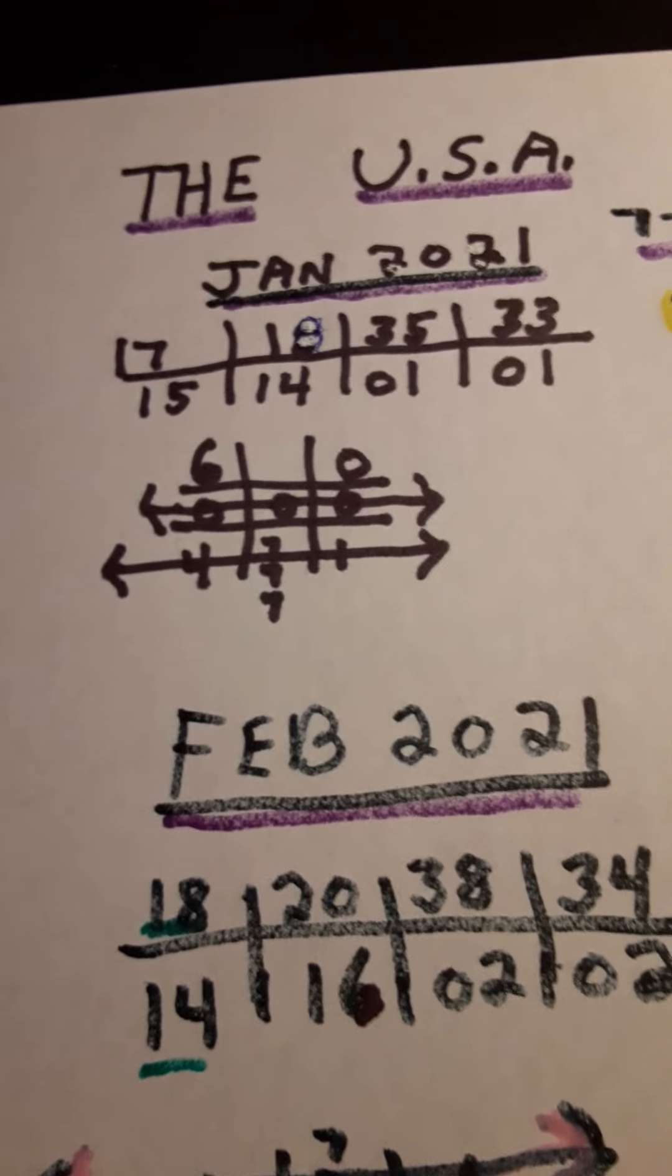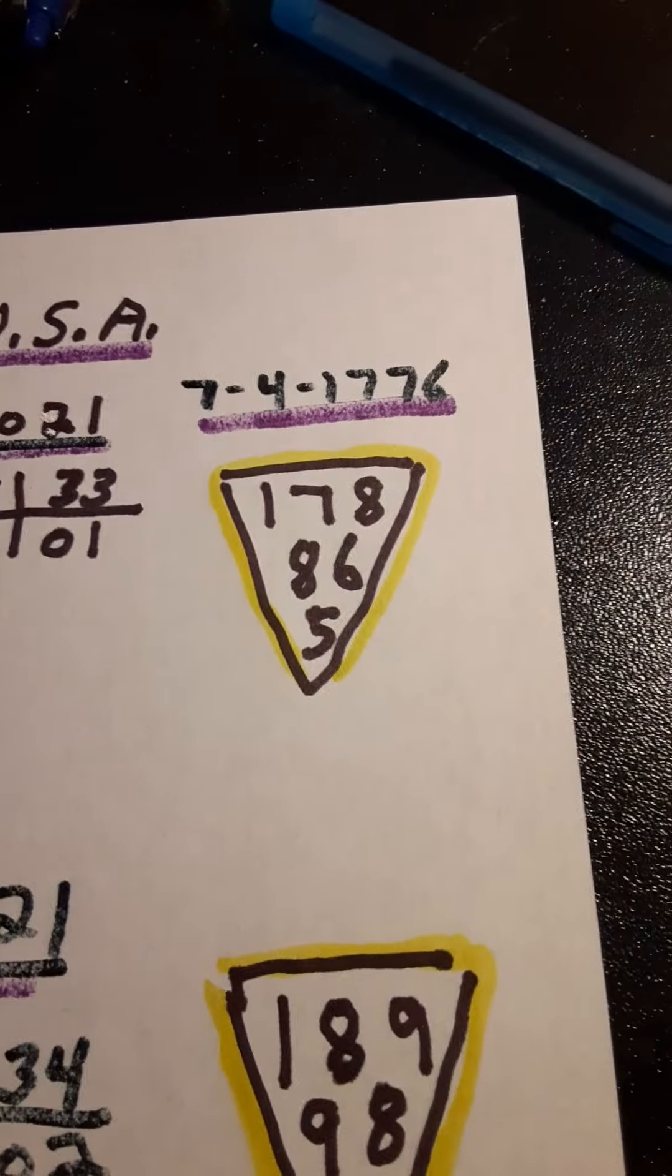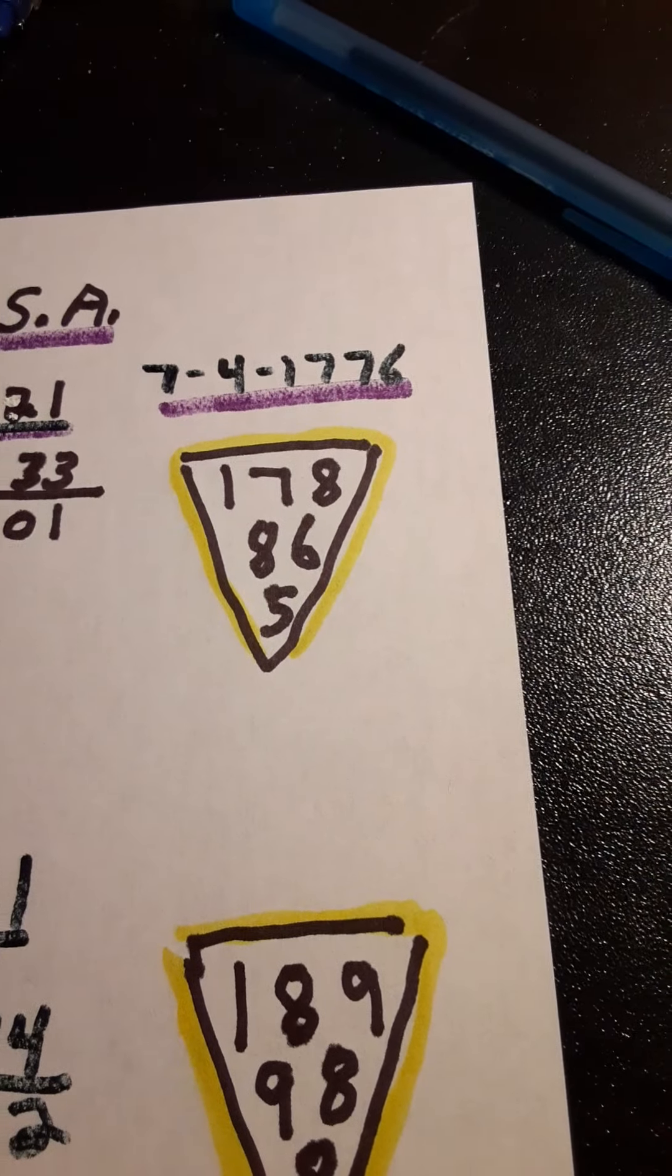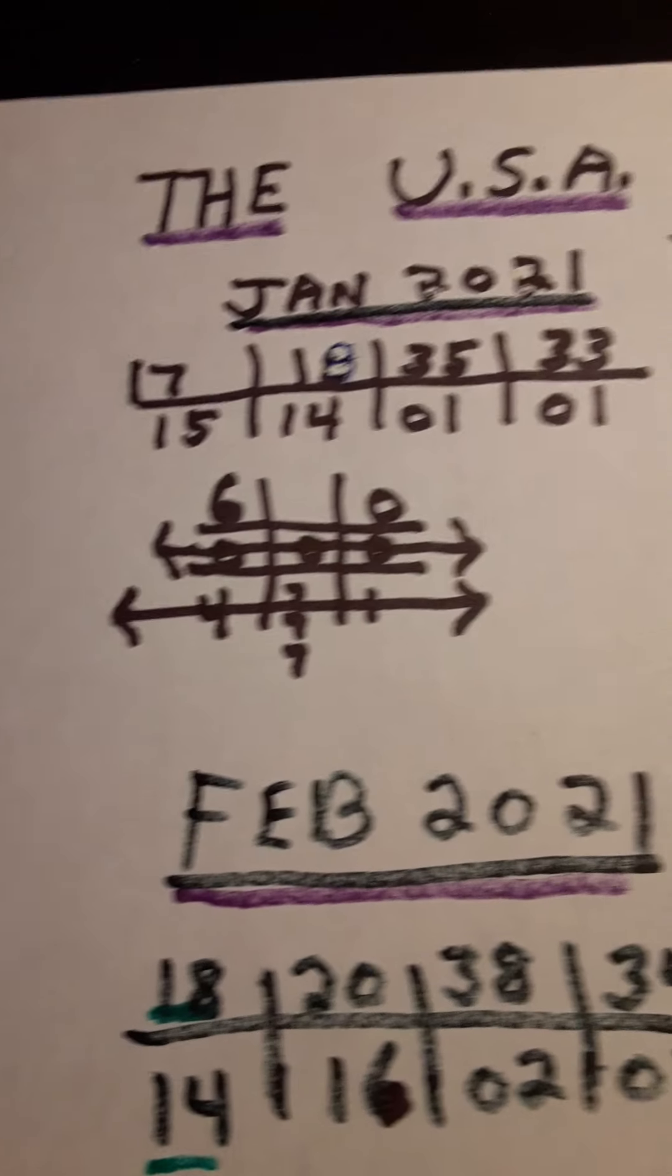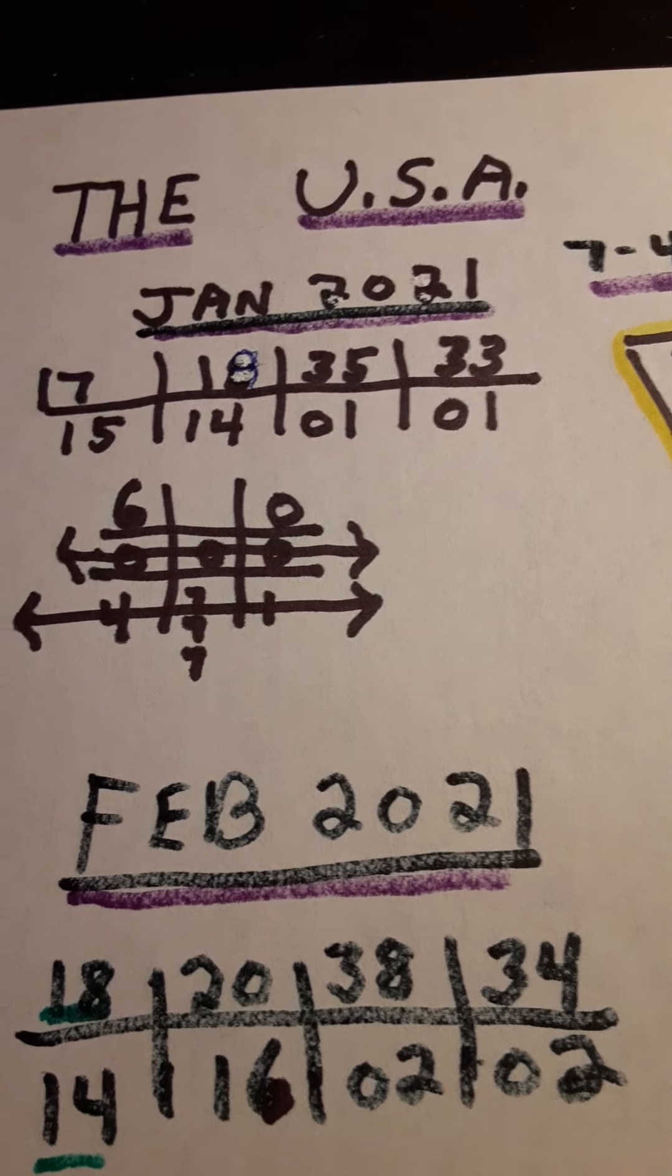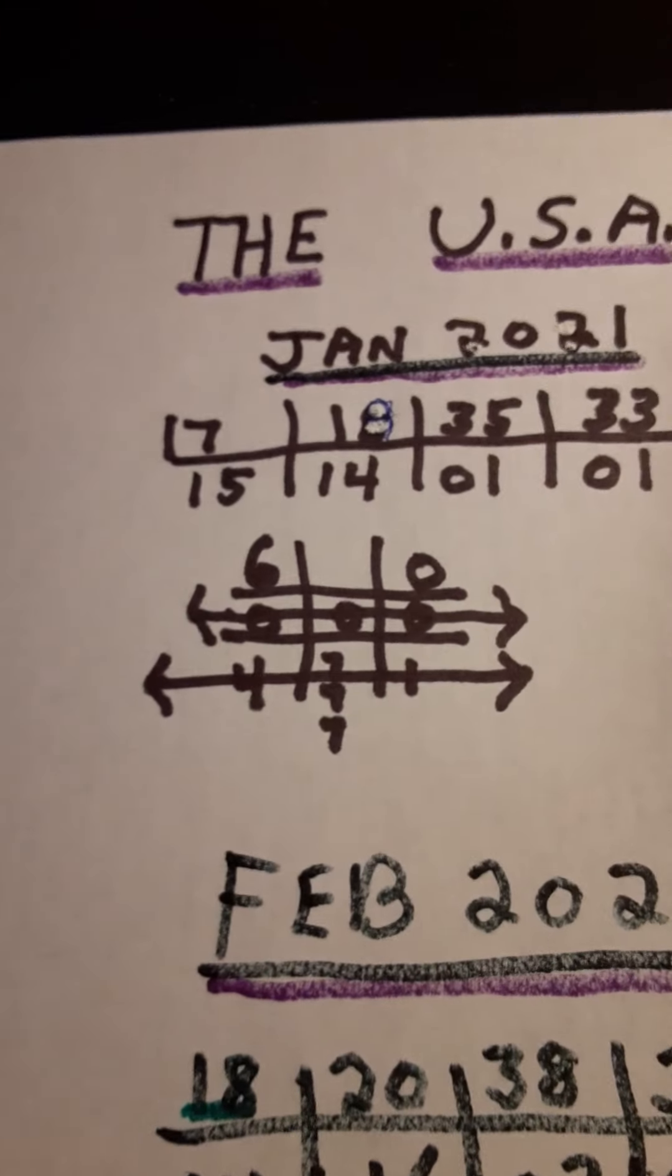This is a chart of the United States. Its birthday is July 4th, 1776. And in January of 2021, I made out a little chart.